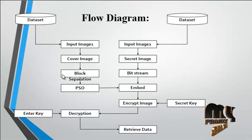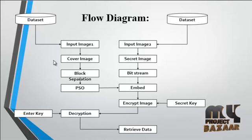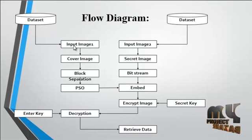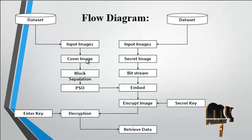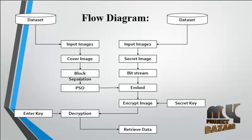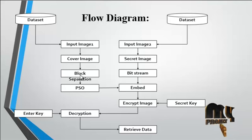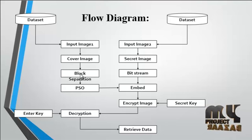Now we discuss the flow diagram for the process. First, input image 1 is taken from the dataset folder, and input image 2 is also taken from the dataset folder. Input image 1 acts as the cover image and input image 2 acts as the secret image. The cover image is first split into blocks — that is, separated into 4 patches.